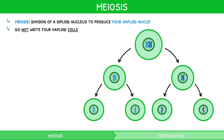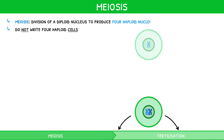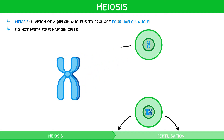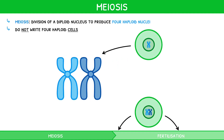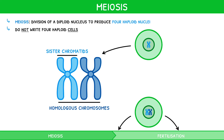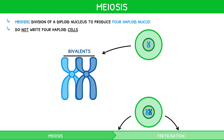Before we explore meiosis, it is necessary to first cover an important change in the organisation of chromosomes that occurs. Unlike in mitosis, before meiosis the DNA is duplicated, so that chromosomes, each consisting of two sister chromatids, arrange to form homologous chromosomes. These homologous chromosomes then further arrange to form pairs, known as bivalents.